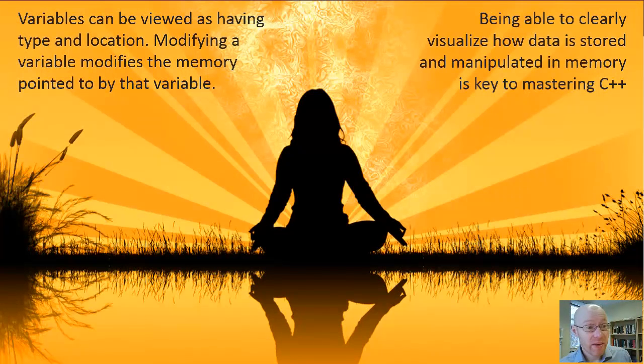So variables can be viewed as having type and location. Modifying a variable modifies the memory pointed to by that variable. So if we were to modify counter or something like that, in essence, we are going to the address associated with that, we're looking at the number of bytes we have across, and we're manipulating the ones and zeros in those particular bytes. But being able to visualize and to think about your program in terms of how things are set out in memory and the types of manipulation that you're doing quite often is a useful ability to have.